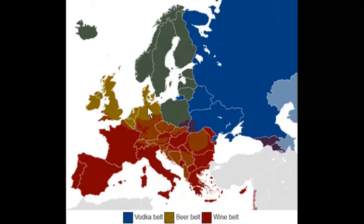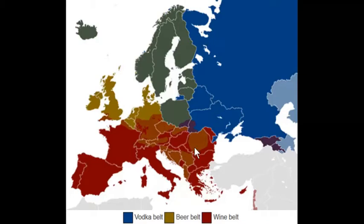In terms of the next belt, we have the beer belt. We think of Germans — we think of beer. We think of the Irish, the Brits — we think of beer. It's because what grows well there are grains, the key ingredient for beer. In fact, the Czech Republic is the number one country in terms of beer consumption per capita in the world. You can see a lot of grains of Europe grown in the central uplands.